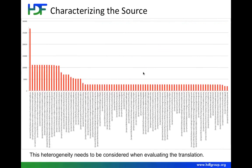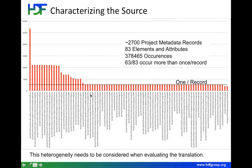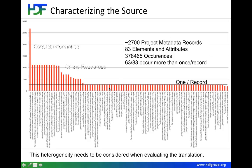Another distribution shows a collection of 2,700 project metadata records. There's a line at 2,700, which is one element per record. This is a very concentrated metadata profile aimed only at describing projects — only 83 elements. In this collection there were roughly 380,000 occurrences, and 63 out of 83 elements occurred once or more per record. In contrast to the last picture, this is a very homogeneous collection of metadata, with each record having almost all elements, focusing on projects with a lot of contact information and online resources.